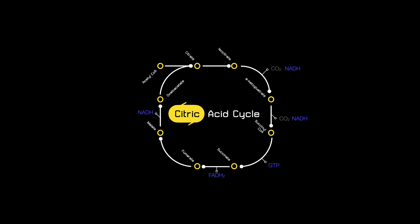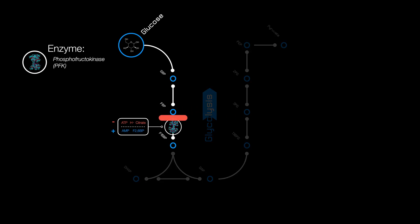If the Krebs cycle is running a lot already, then we don't really need any more glucose processed from glycolysis. So we should slow it down and divert glucose for storage as glycogen. This is how glucose is regulated as a fuel source.